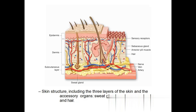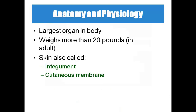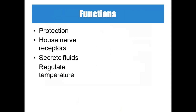In anatomy and physiology, the skin is considered the largest organ of our body. It weighs around 20 pounds — approximately 1,200 to 1,300 grams. Skin is also called the integument or cutaneous membrane. Its functions include protection and housing nerve receptors such as touch, temperature, pressure, and pain. It also secretes important fluids through exocrine glands — sweat glands and sebaceous glands.